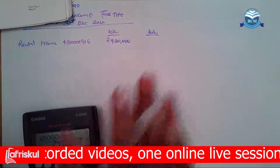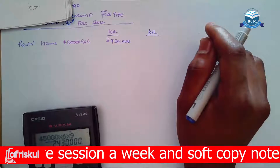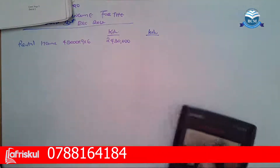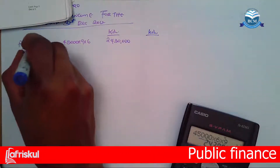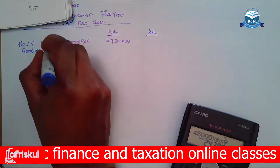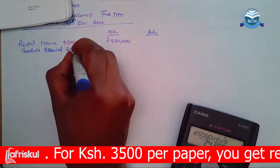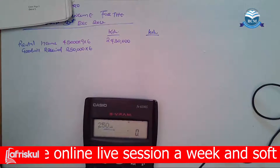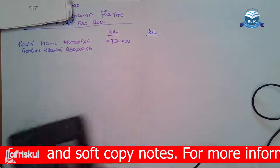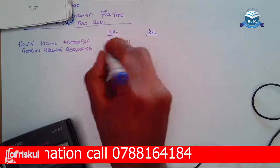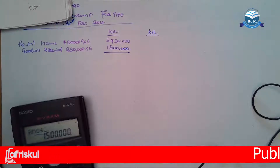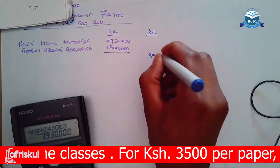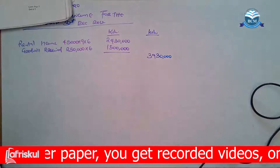You have also been told that the goodwill received for each house was 250,000 covering a five-year period. So here you have another income called goodwill. The goodwill received: he received 250,000, multiply by 6 houses, giving 1.5 million. So you add: 1,500,000 plus 2,430,000 to get 3,930,000.